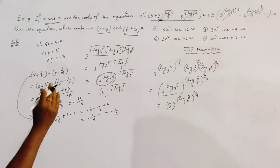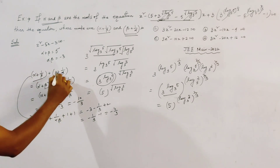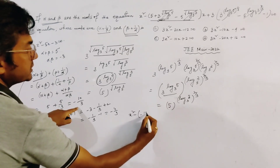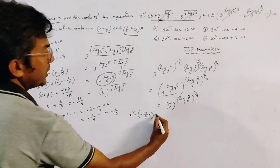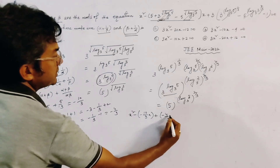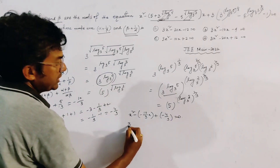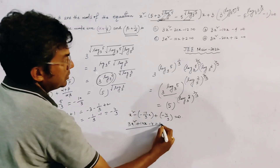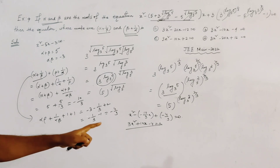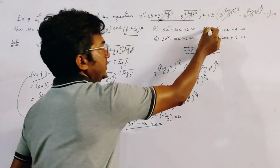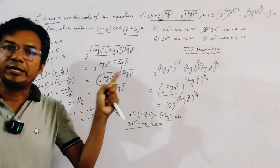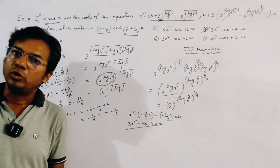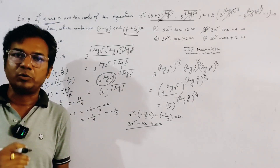So the equation whose roots are the two transformed expressions is x squared minus (minus 10 by 3)x plus (minus 4 by 3) equals 0. The correct option is option D. This is a very important and interesting problem from quadratic equations, also using properties of logarithms. Thank you for watching.